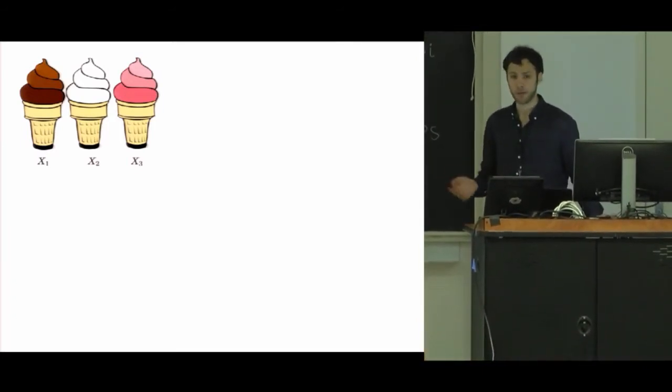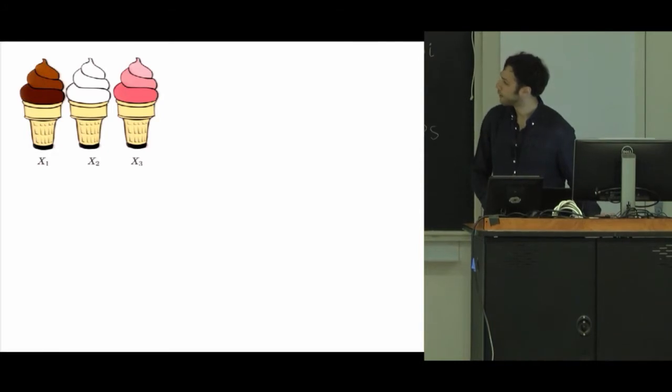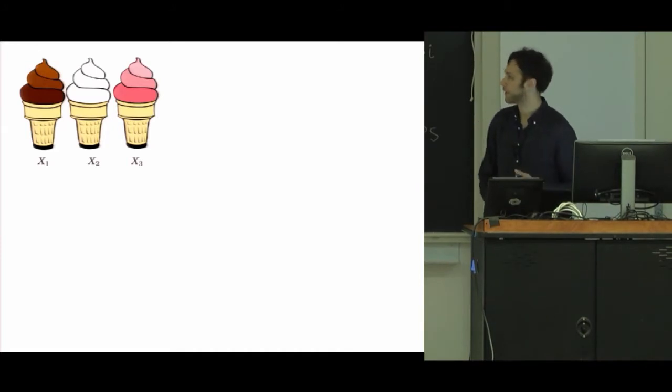Imagine that I'm an ice cream store. Maybe I'm Baskin Robbins. I have 200 flavors I can carry, and I want to find the best 31 flavors to stock in the store. So how do I do that, and how do I use Bandit, fixed budget kind of learning principles to do that in the optimal way?